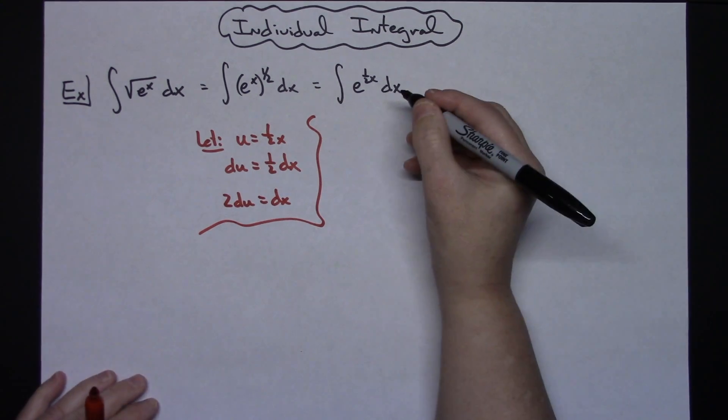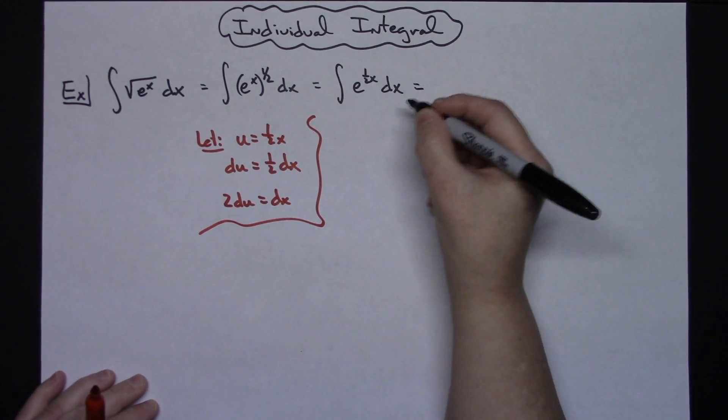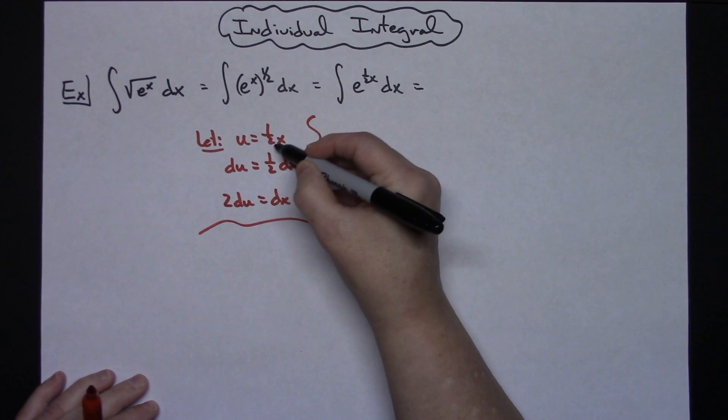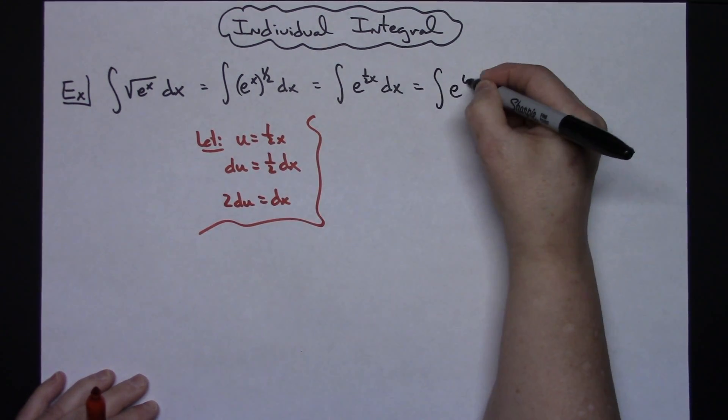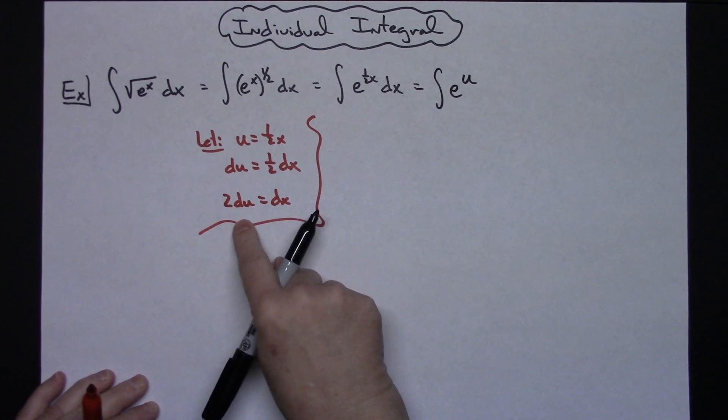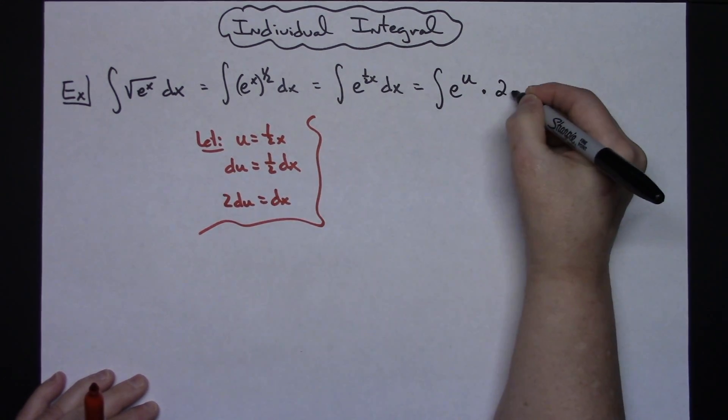Now coming back up here and doing some substituting. The one-half x is u, so I'll have the integral of e to the u. Replacing dx with what that equals, I'll have a 2 du.